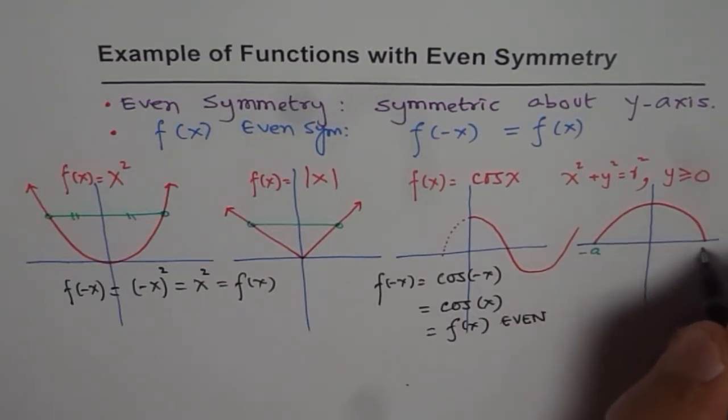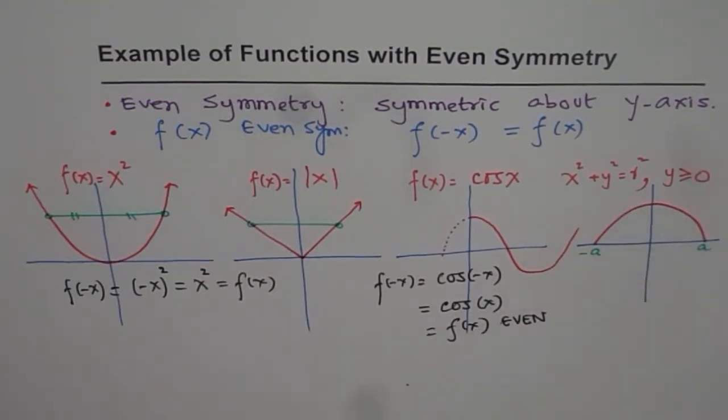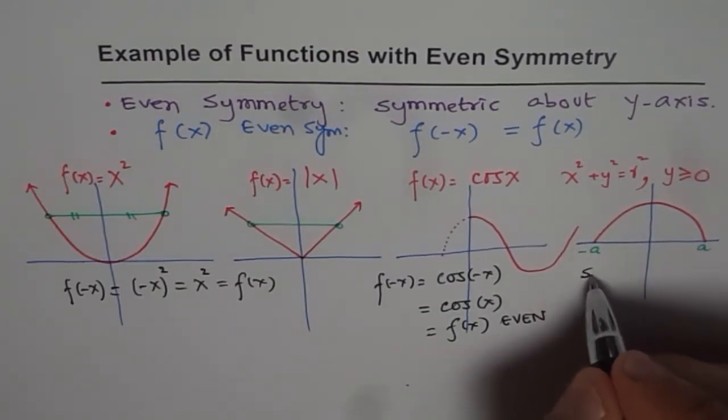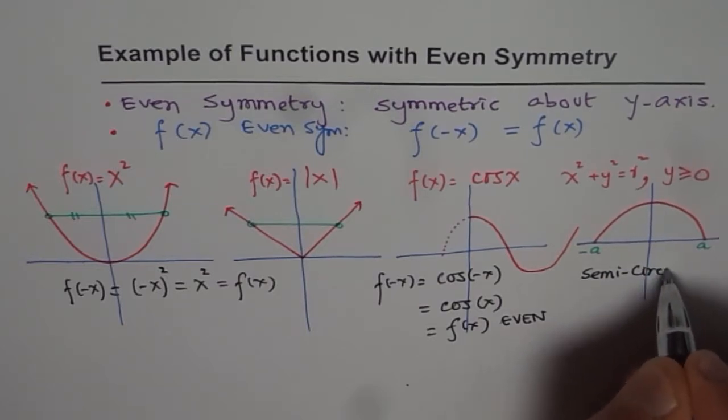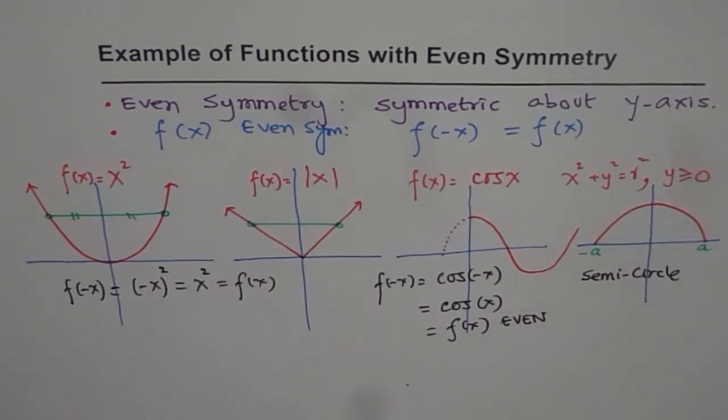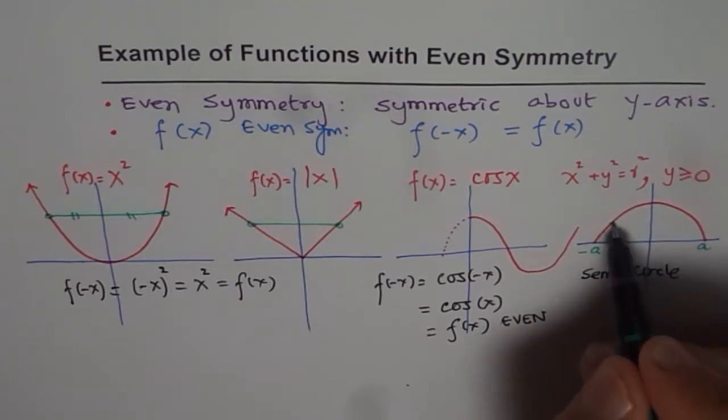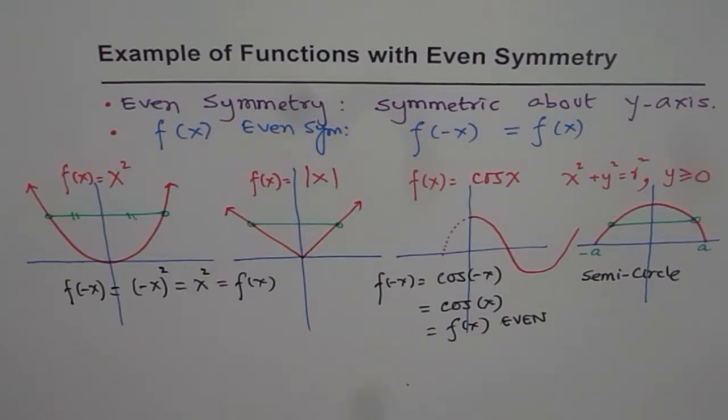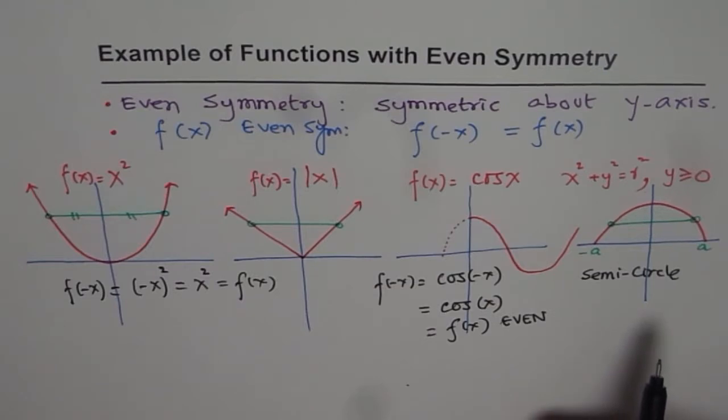And if this point is -A, then this point is A. So semicircle has even symmetry. So that has even symmetry, provided we do a restriction on, so we'll say semicircle. So that is also even in nature. As you can see from the graph, every point on the left side has a mirror image on the right side. So these functions, which we'll be exploring in greater detail soon, all have even symmetry.